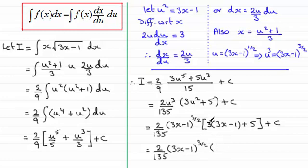And then when it comes to this bracket here, I've got 3 times 3x, which is 9x. And then 3 times minus 1, which is minus 3, plus that 5 is plus 2. And then we've got the constant of integration plus c.